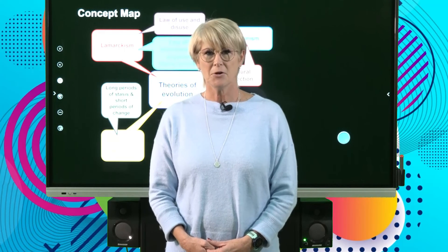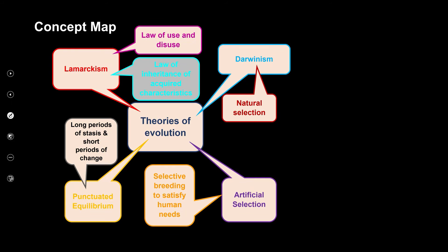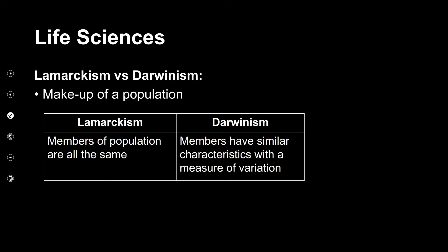Welcome back from the break. We were looking at theories of evolution — Lamarck and Darwin. Now we're going to compare the differences between Lamarckism and Darwinism. The first difference is the makeup of a population. Under Lamarck's theory, he believed all organisms were born with exactly the same characteristics and there was no variation. Whereas in Darwin's theory, members have similar characteristics but there is variation amongst the offspring.